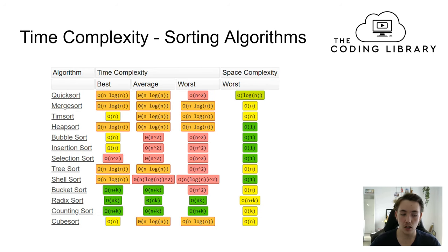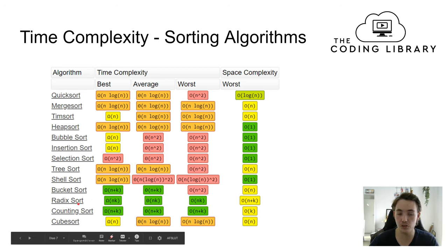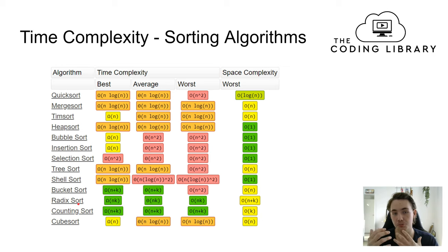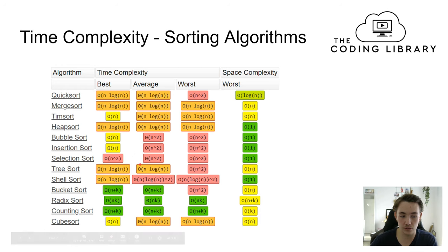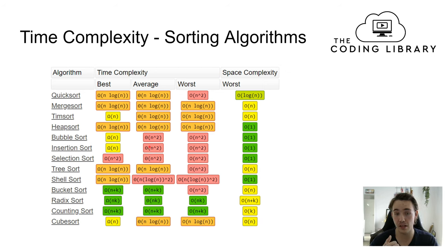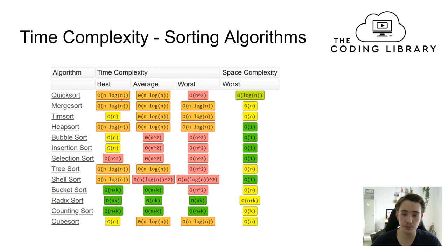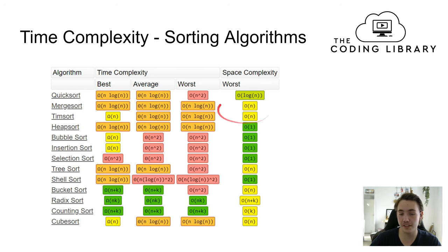For sorting algorithms, the best performers are bucket sort, radix sort, and counting sort, but these are for special cases requiring specific conditions. For general use, quicksort is one of the best with O(n log n), compared to bubble sort, insertion sort, and similar algorithms that have O(n²) quadratic complexity. With many input elements, quadratic complexity grows very steeply. Quicksort's worst case space complexity is O(log n), while merge sort and Timsort have linear space complexity.